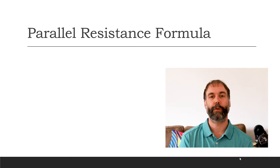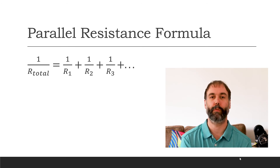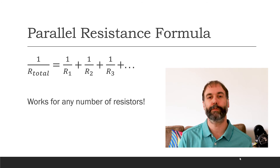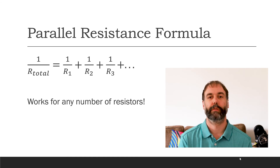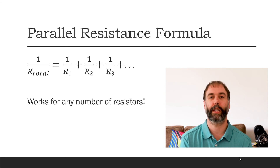So you might be wondering how to actually calculate the total resistance for a parallel circuit. Here's the parallel resistance formula: one over the total resistance equals one over the first resistance, plus one over the second resistance, plus one over the third resistance, and so on. This formula works for any number of resistors you have, whether it's one, two, three, or as many as you want.